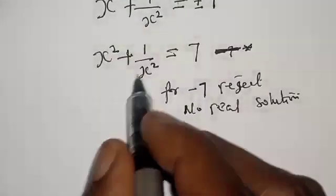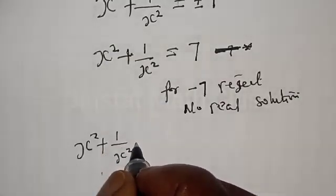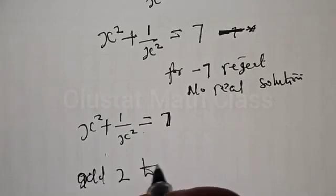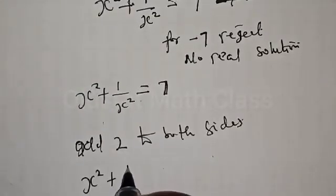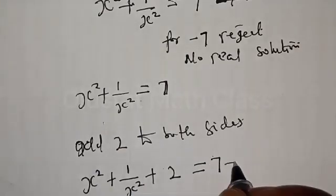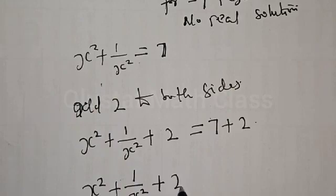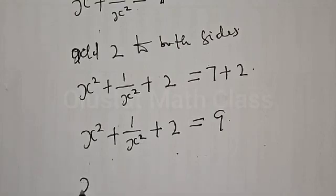From equation star, we have s² plus 1/s² is equal to 7. Adding 2 to both sides, we get s² plus 1/s² plus 2 equals 7 plus 2, which is equal to 9.